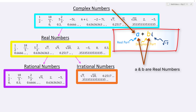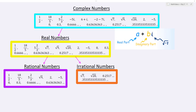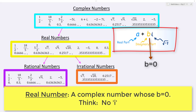It doesn't matter if it's a fraction, decimal, radical, has an i, or doesn't have an i — everything that you're working with will be a complex number in college algebra. From there, we're going to split down to a subset called the real numbers. The real numbers are also of the form A plus Bi, but they're the case where B is 0, meaning there's no imaginary part and no i.